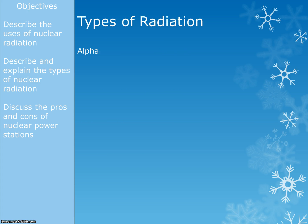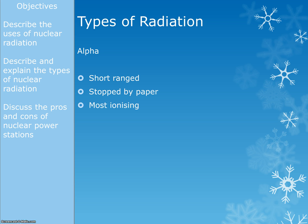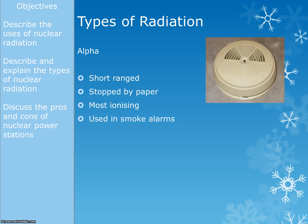Ionising radiation comes in three varieties. There is alpha, which is really short range — it doesn't travel very far, just a few centimetres. It can be stopped by something as thin as paper, but it is the most ionising type of radiation, which means it's the most dangerous because it's the most likely to damage your DNA.